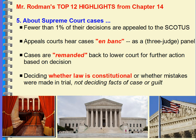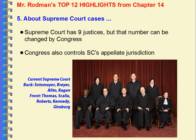It's important to point out that appeals courts and the Supreme Court are trying to decide whether the law is constitutional and if mistakes were made in the trial. They're not looking at facts of the case or guilt or innocence. They're really determining: was due process followed? Were mistakes made? Was something done that was unconstitutional? That's what they're looking at to determine if a case should be remanded or thrown out. The nine justices — that number can be changed by Congress — and the appellate jurisdiction is also decided by Congress, not the nine justices themselves.